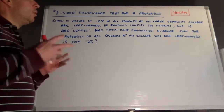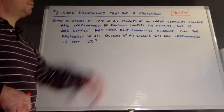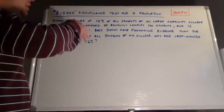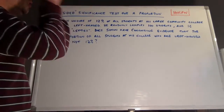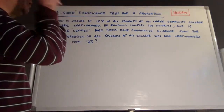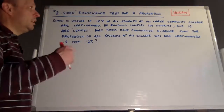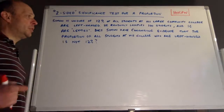We're going to use our five-step process: hypotheses, name the test, check the conditions, find the p-value, write your conclusion — HNCPW.